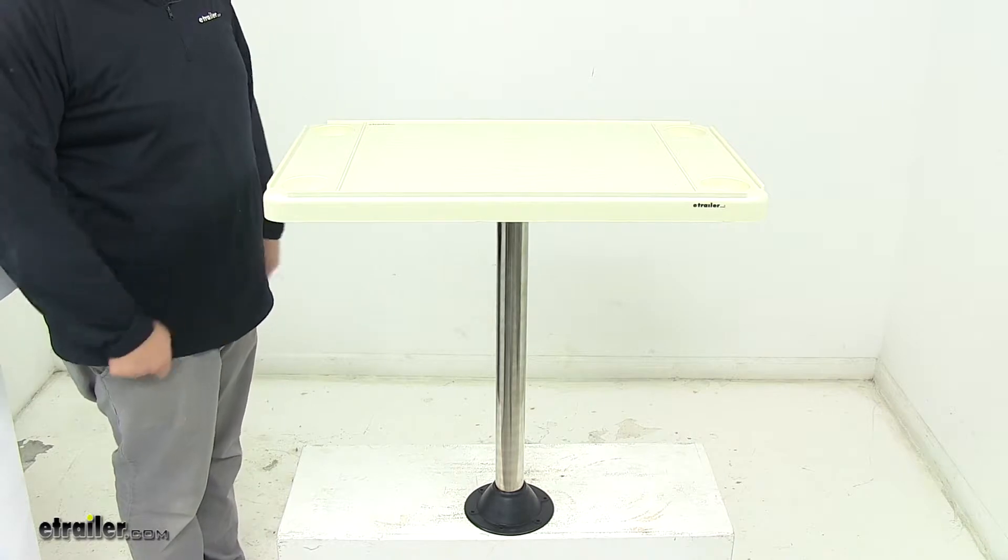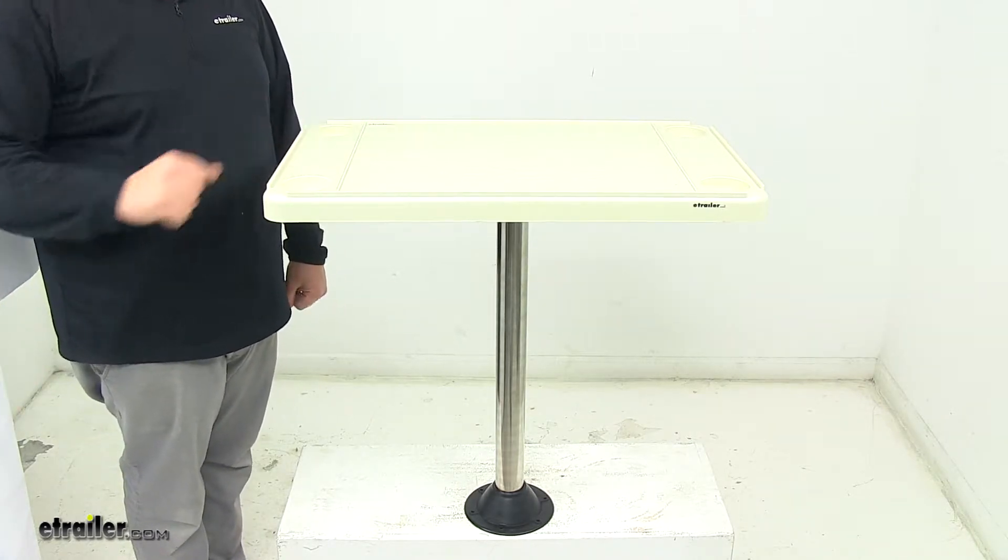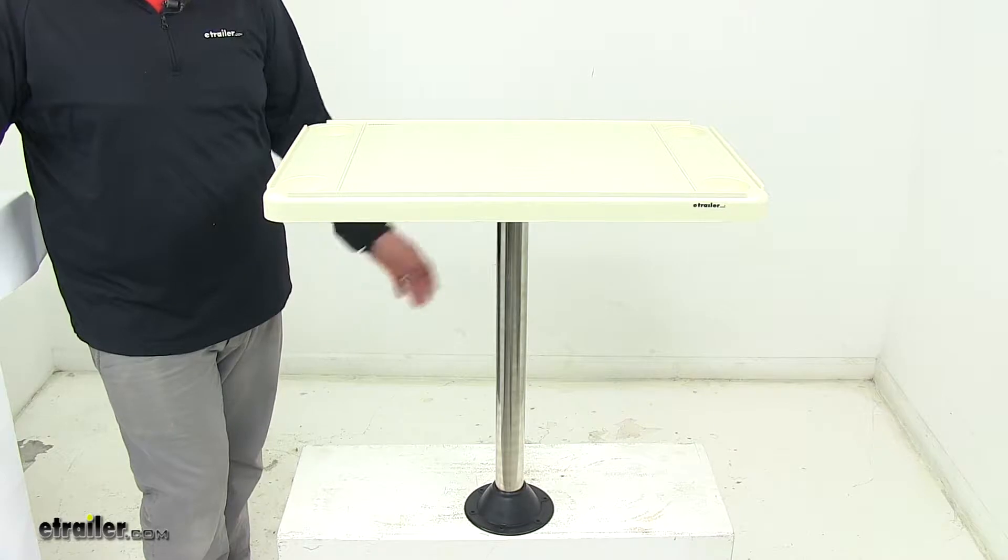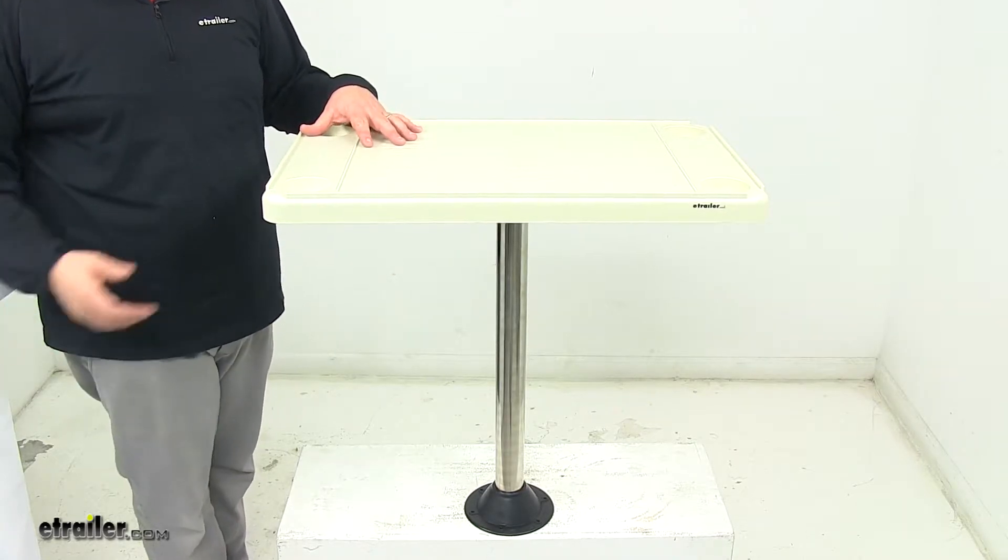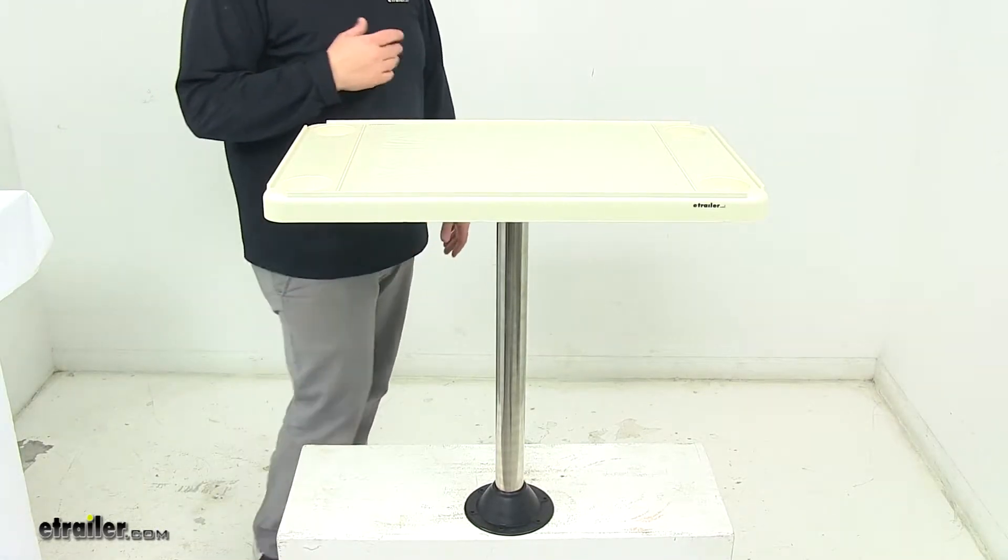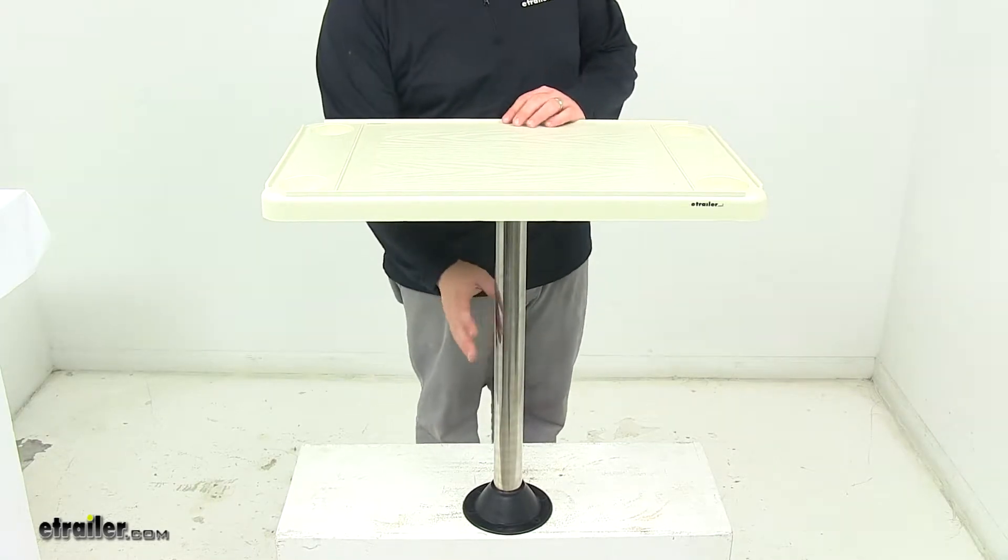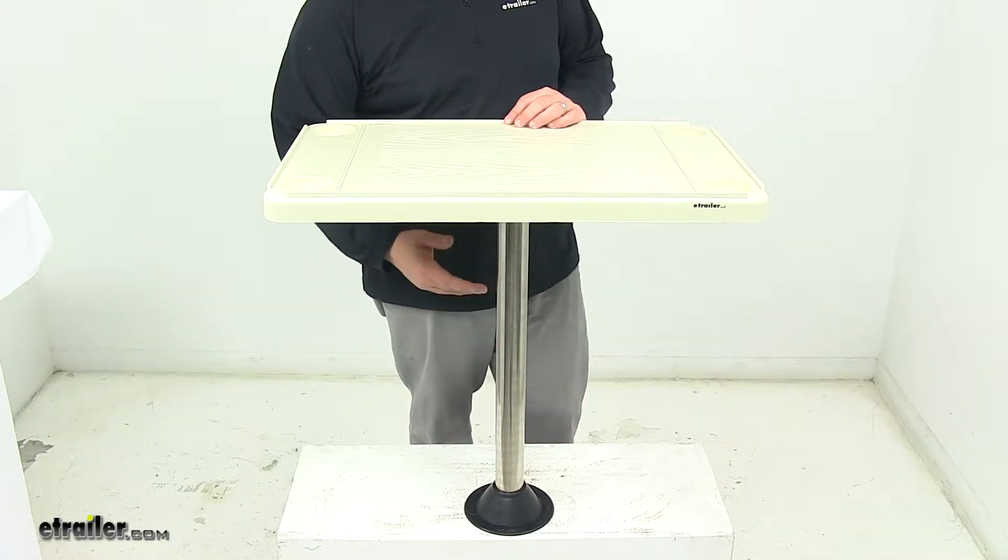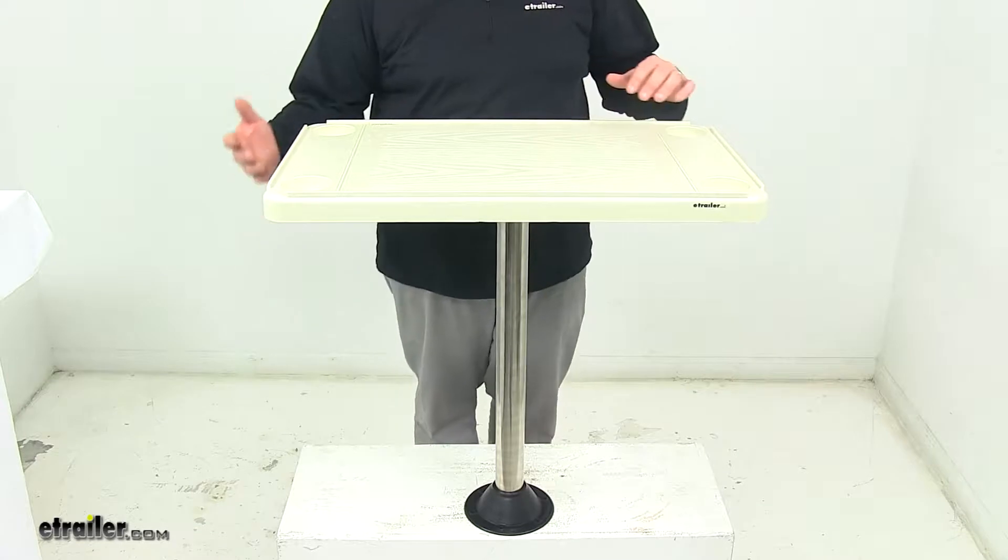It's molded high-impact plastic when it comes to the construction of the tabletop. It's very strong and durable, cleans easily with soap and water, and it's also designed to resist UV rays, salt, and corrosion. Now the leg on the unit is stainless steel, ensures strength and durability, as well as stability.